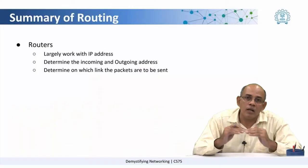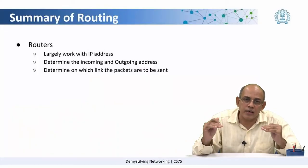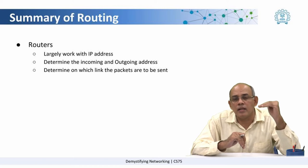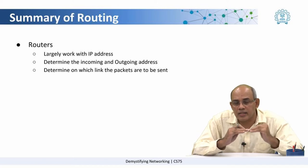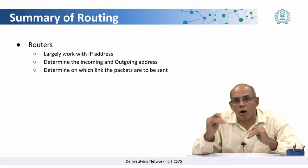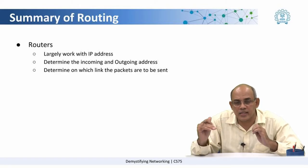If we look at it in abstract terms, both routers and switches actually perform the same function. Their job is basically to get a packet on the incoming link, determine which is the outgoing link to send this packet out on, and send it on the appropriate outgoing link. Routers largely work with IP addresses — they determine the incoming IP address, the destination IP address, and try to determine what is the outgoing link on which the packet has to be sent.